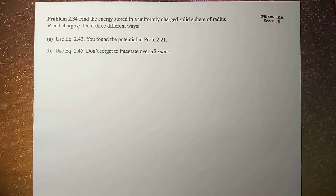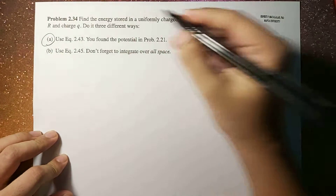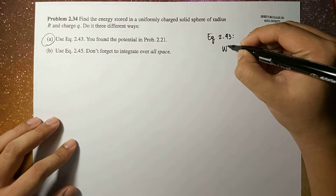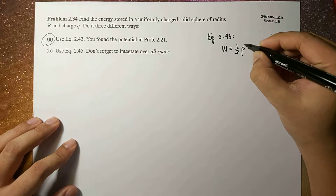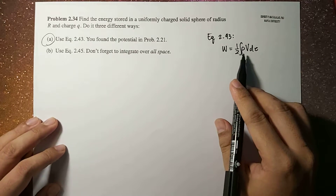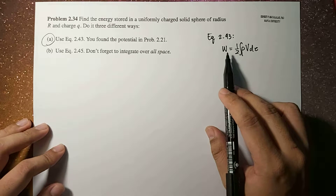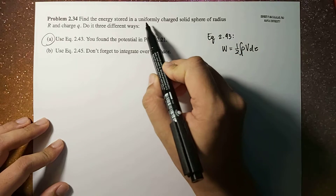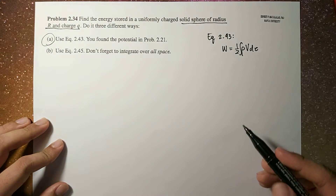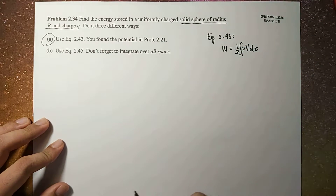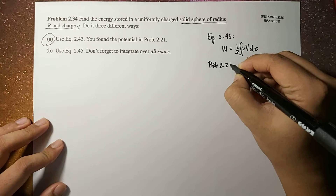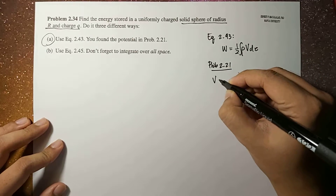So what is equation 2.43? Equation 2.43 is given by: work W equals one half times the integral of rho times V d-tau. Here we're going to compute the work done, or the energy stored, in this uniformly charged solid sphere of radius R and charge Q. We're also going to use the result from problem 2.21.